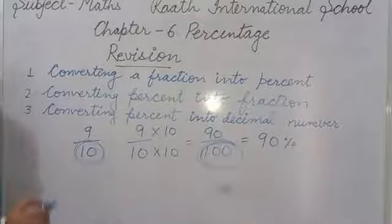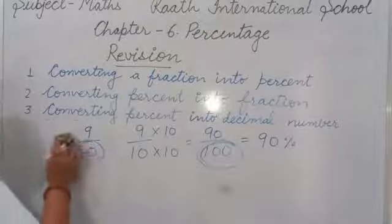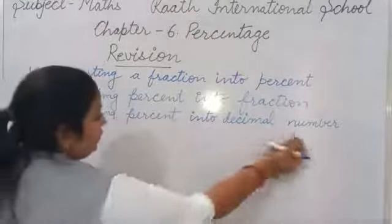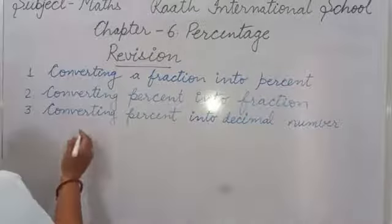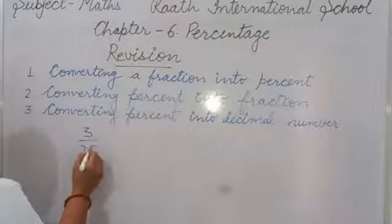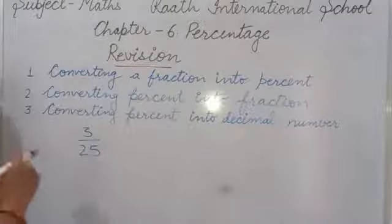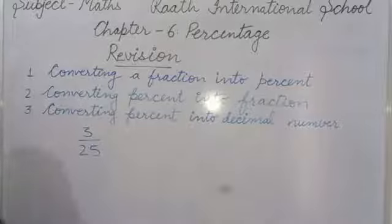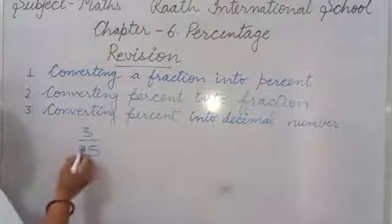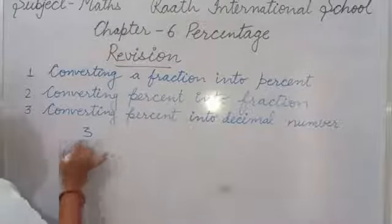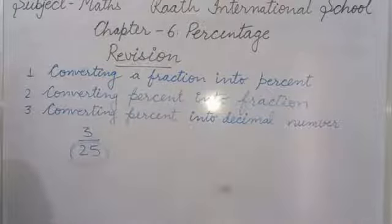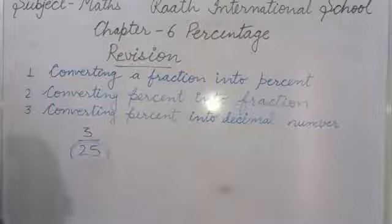Suppose we have another example: 3 upon 25. How do we convert this fraction into percentage? The same method — in the first method, we convert the denominator into 100. How can we make 25 into 100? 25 multiplied by 4 equals 100.